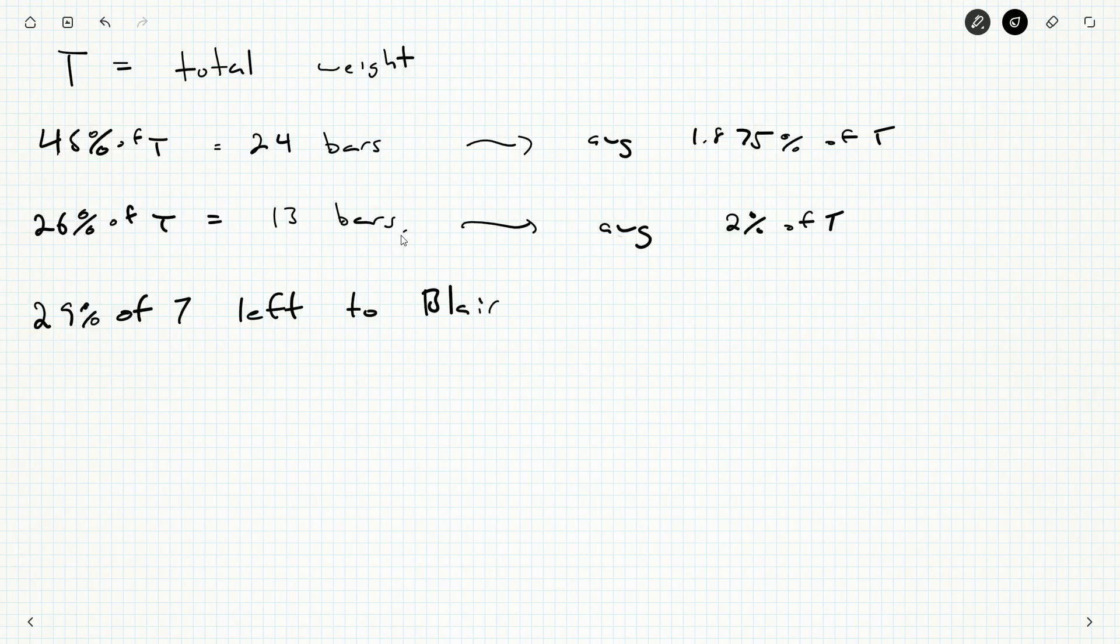Now, these bars are heavier than the 24 bars. They are lighter than the 13 bars. So their average should be less than 2% of T but greater than 1.875% of T. Now, how do we calculate the average?